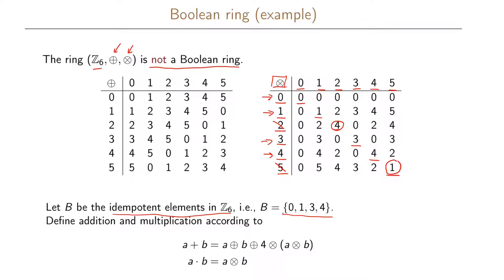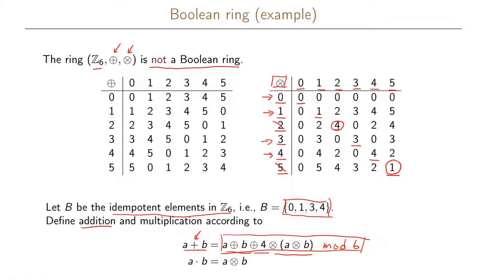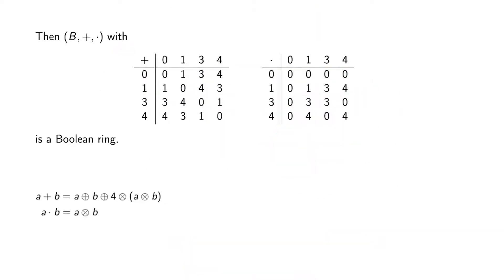We take only these elements and redefine addition such that the addition in our ring is a plus b plus 4 times a times b, computed modulo 6. So this is our operation in the ring, and this is how we compute the values. For multiplication, we use what we had before: a times b is simply a times b modulo 6. If we define our ring this way — with elements we call b, and the addition and multiplication operations defined as above — we can write the tables for addition and multiplication.